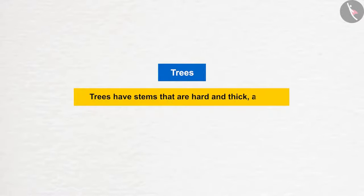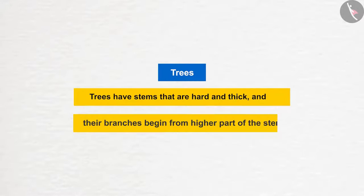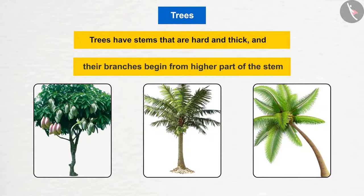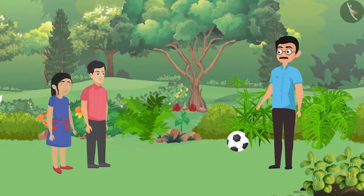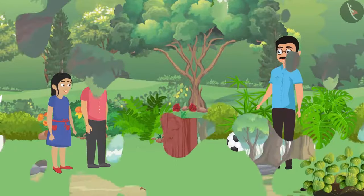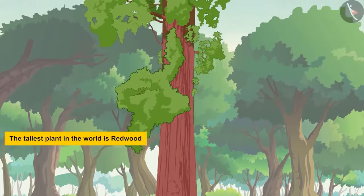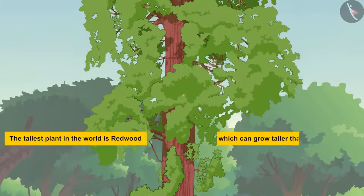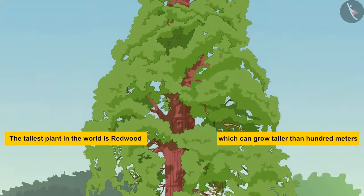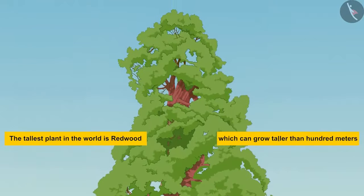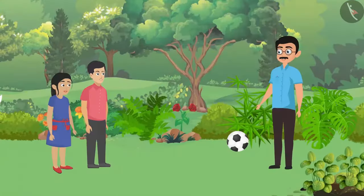The next type of plants are trees. Their stems are hard and thick, and their branches begin from the higher part of the stem. Mango, dates, and coconuts are some examples. Father added that the tallest plant in the world is the redwood, which can grow taller than 100 meters — taller than a 30-floor building — and is found in the United States of America.